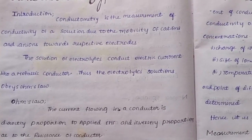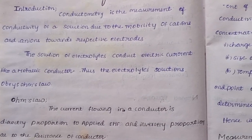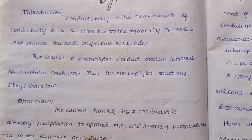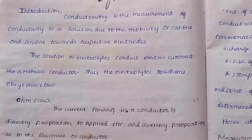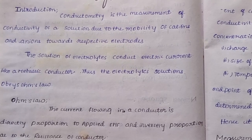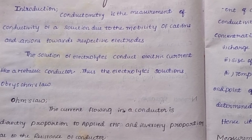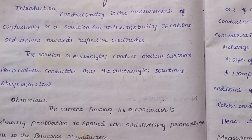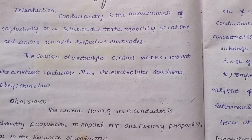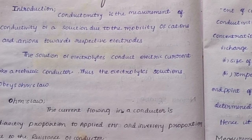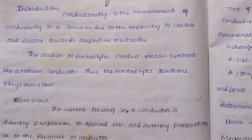Conductometry is the measurement of conductivity — the capacity of a solution to conduct electricity. In a solution we have anions as well as cations, and there is movement of ions of different sizes and different concentrations.